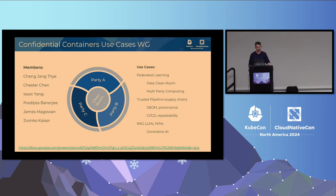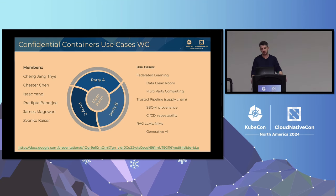One of the working groups is our confidential containers use case working group. Different companies from IBM, Red Hat, NVIDIA, Intel, and AMD are involved, and we identified three major use cases to push forward upstream. Number one is federated learning, which includes a data cleanroom — we have different peers and an integration server working in one confidential environment. We need to share this environment and provide a data cleanroom for multiple personas, which ties into multi-party computing. It's not only a single node running a confidential container; it's multiple nodes.